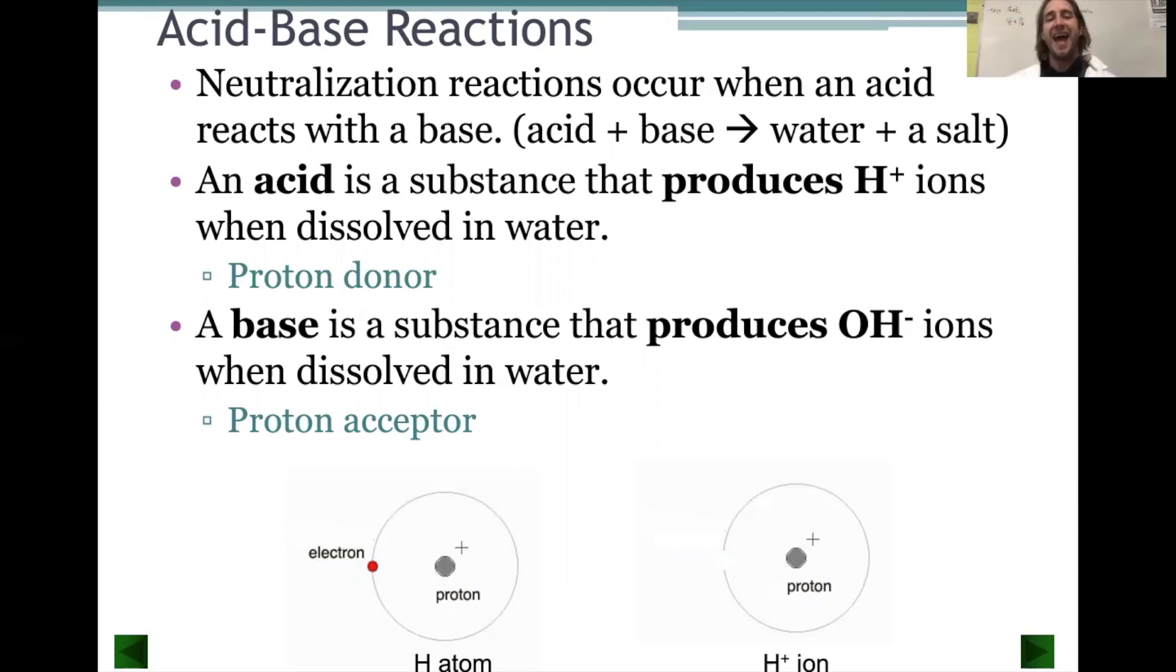By definition, and this is actually the Arrhenius definition, an acid is any substance that can give off an H+ or a proton in solution when dissolved in water. It's a proton donor. It gives away an H+. This makes sense. When we did our nomenclature, we said anything that starts with a hydrogen we're going to consider an acid because it could give it away into the solution.